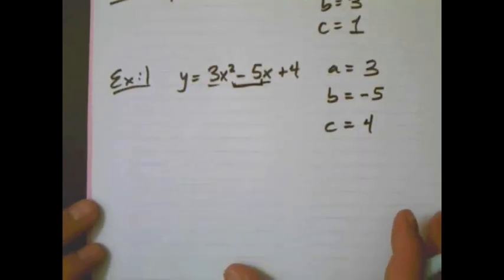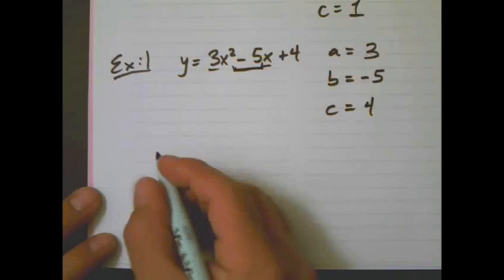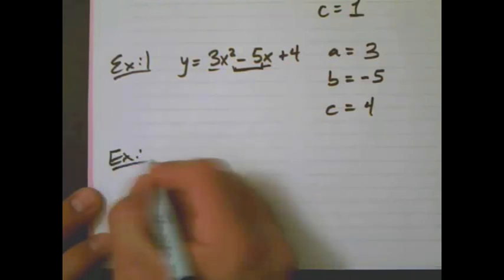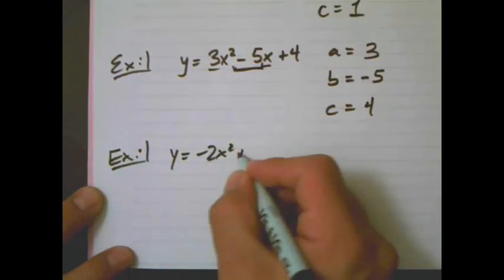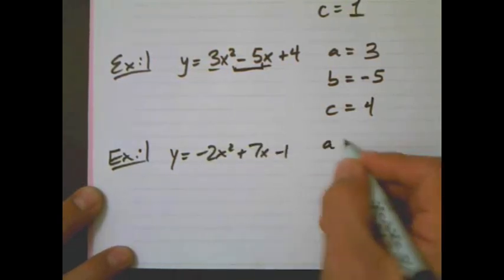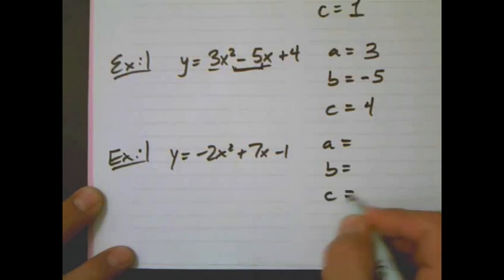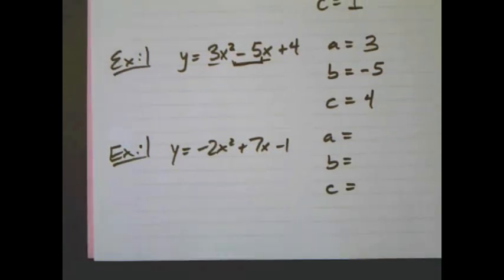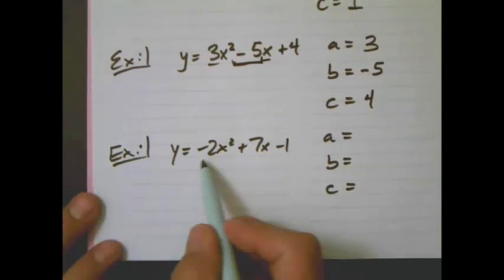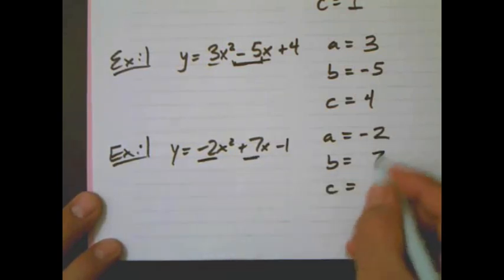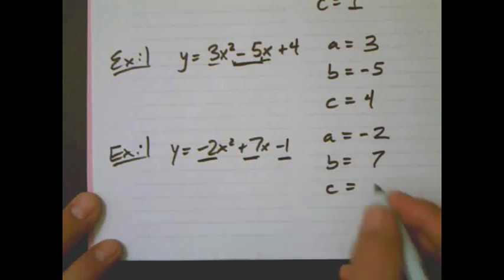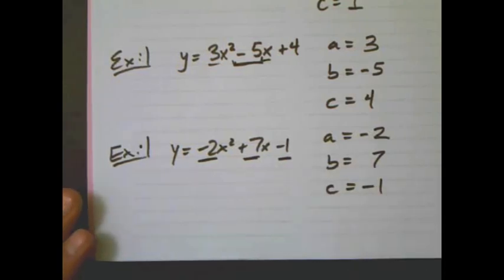We're going to look at 2 more. Only 2 more. Well, actually, 3 more. I lied. So, we're going to look at the backyard. Negative 2x squared plus 7x minus 1. Hopefully, now you're realizing how easy this is. a equals negative 2. b equals 7. c equals negative 1. Incredibly simple.